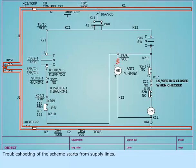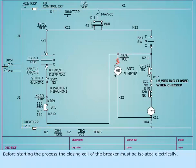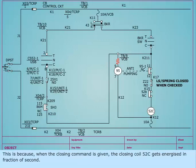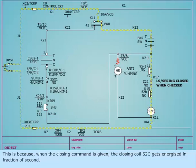Troubleshooting of the scheme starts from supply lines. Before starting the process, the closing coil of the breaker must be isolated electrically. This is because when closing command is given, the closing coil 52C gets energized in a fraction of a second.